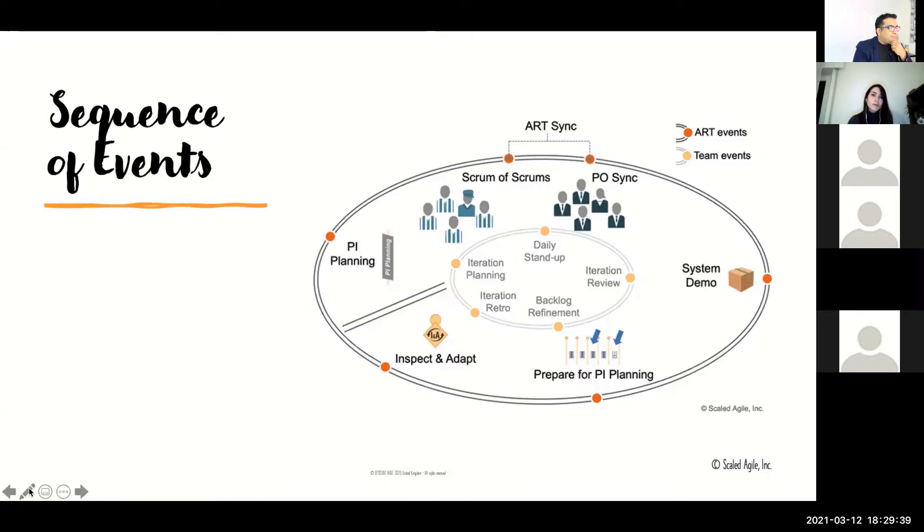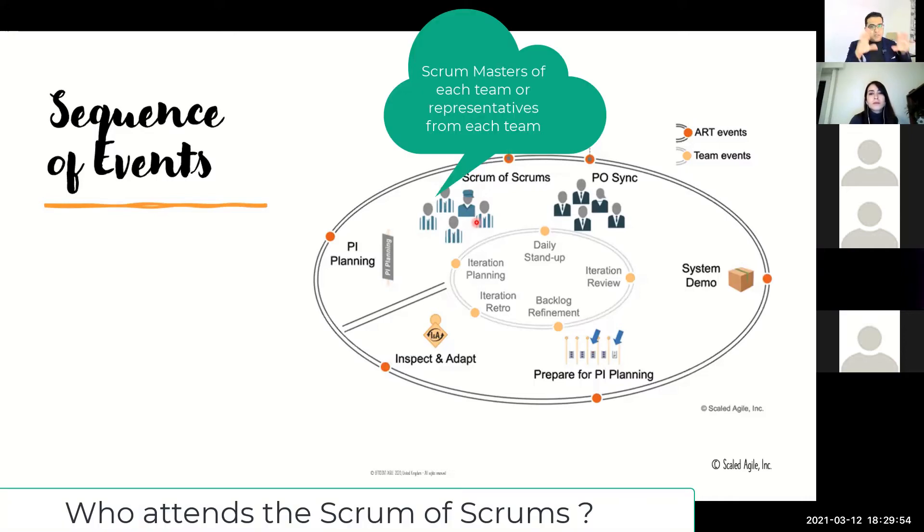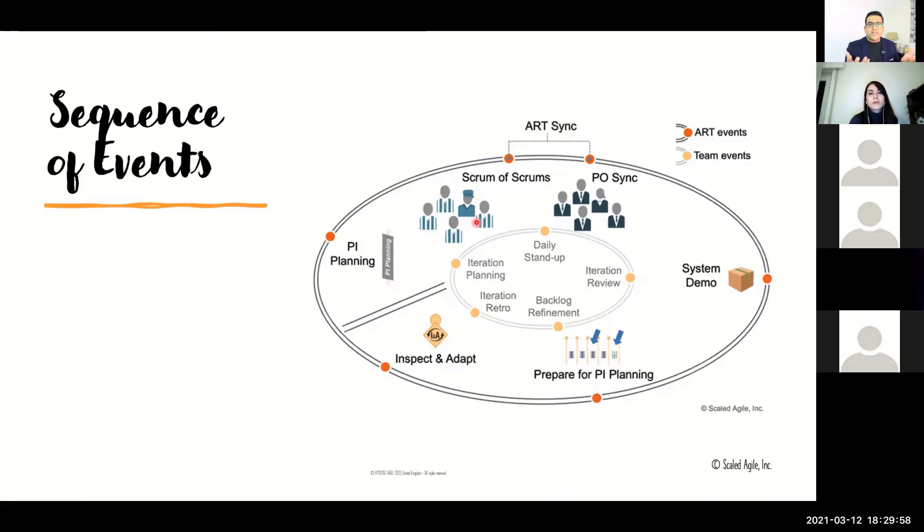This is the RTE, the one with the hat. You've got all the team members around here and these are the scrum masters. Who comes to the scrum of scrums? The scrum masters. If your scrum master is not available, you could also get a representative from each of the teams who has enough knowledge to address the dependencies or impediments.